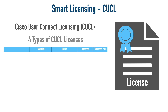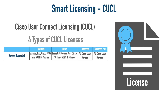Considering the endpoints supported by the different models: Essential supports analog phones via FXS ports, fax relay, and a couple of specific Cisco IP phone models. Basic adds the 7811 and 7821 phone models. Enhanced and Enhanced Plus give support for all Cisco user devices. For the number of associated devices, all tiers except Enhanced Plus allow one device per user, while Enhanced Plus allows a user to be associated with multiple phones.